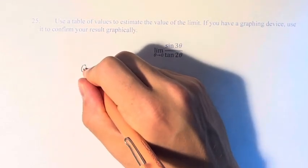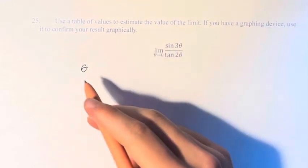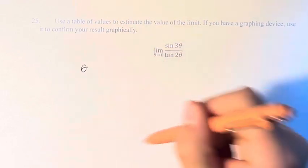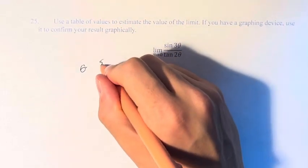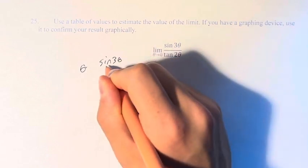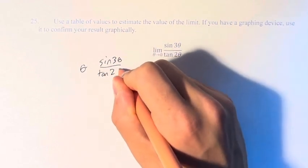So what we have to do is choose values of theta that are approaching 0, that are getting closer and closer to 0, and we plug those in to the fraction we have, sine of 3 theta over tangent of 2 theta.